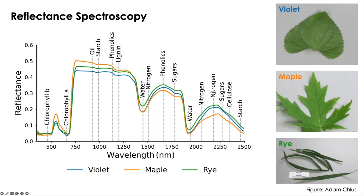Some complex molecules have absorption features at longer wavelengths—for example, nitrogen as part of proteins. There are very small features, such as phenolics at about 1660 nanometers. Maples tend to be very high in phenolics, and these very small features in the spectrum can be used to get a lot of information that we might otherwise have to use complex and expensive laboratory chemistry to obtain.